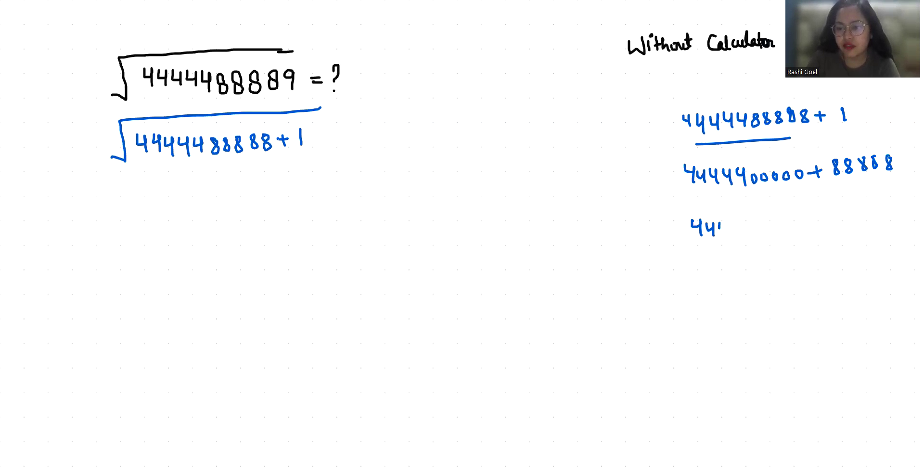Now this becomes 44444 times 10,000 plus 88888.